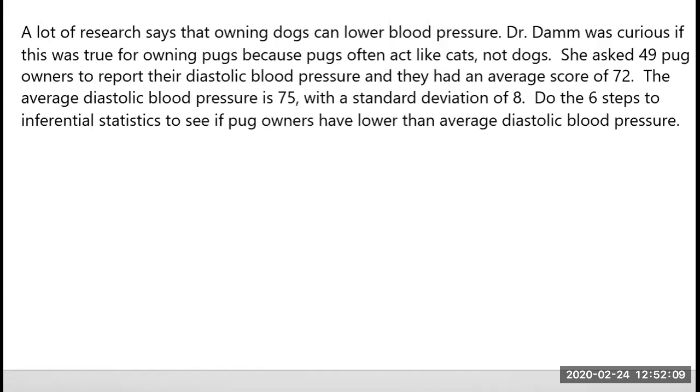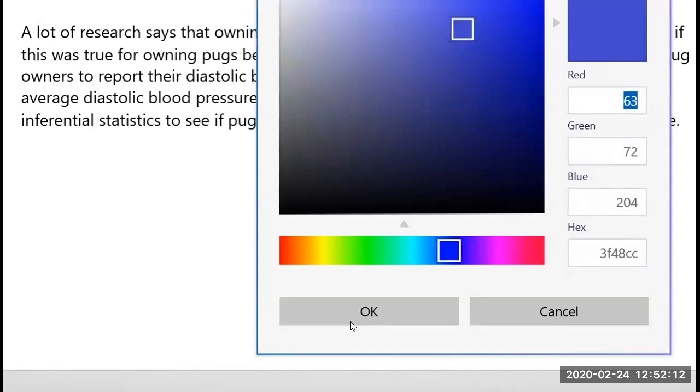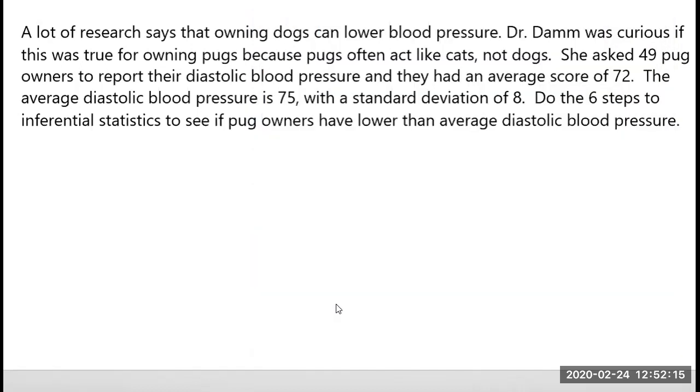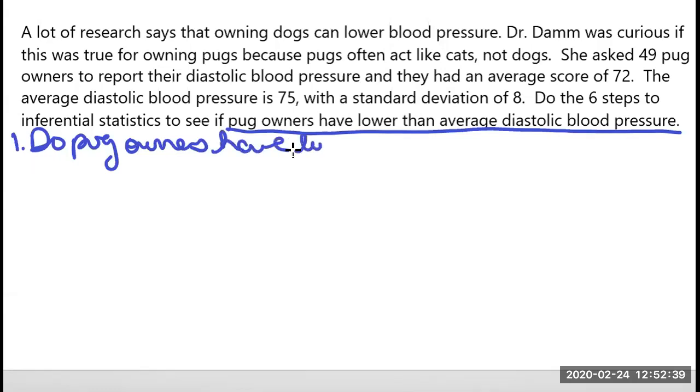So we're going to go ahead and do these six steps. Let me just get that set up there. So my first step again is to do my research question. And so really what I can do is grab that from the last question. It says do the six steps to inferential statistics to see if pug owners have lower than average diastolic blood pressure. So it's going to be a yes, no question. Do pug owners have lower than average diastolic blood pressure? Question mark.